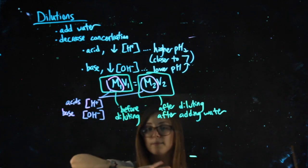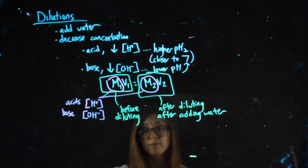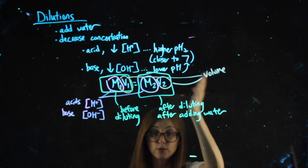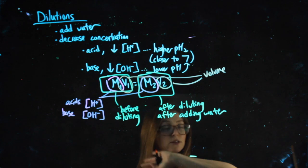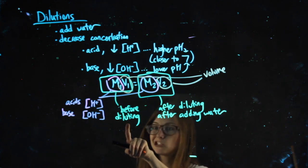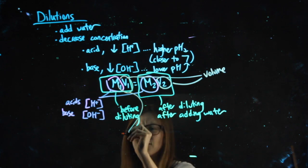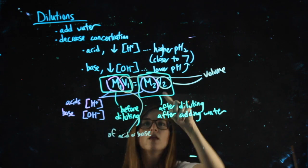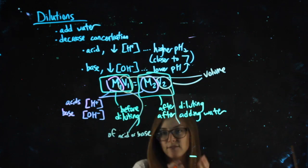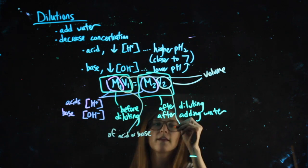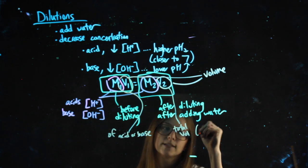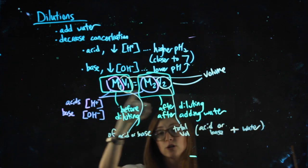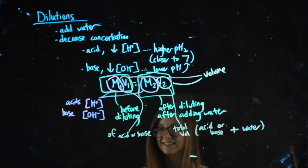The V's are volume. It doesn't matter if you use milliliters or liters as long as the units are the same on both sides — milliliter to milliliter, you're okay. The volume before diluting is just going to be of the acid or the base; it's never going to be the water by itself — we're not diluting water. The volume after we've diluted it is whatever acid or base we're diluting plus the water; that's the total volume. You should never have a volume that is just water.